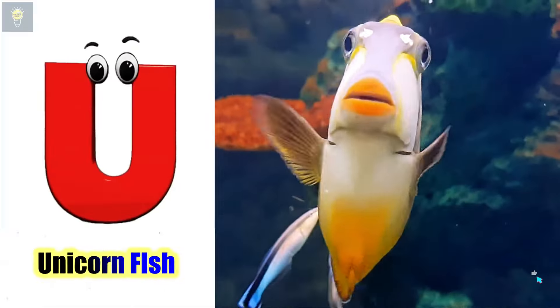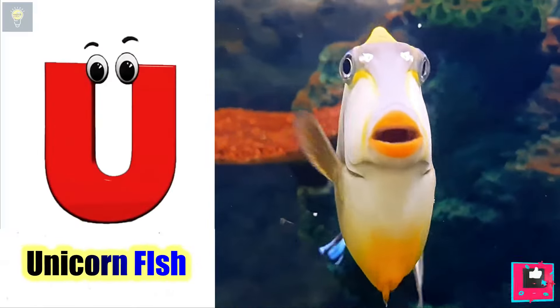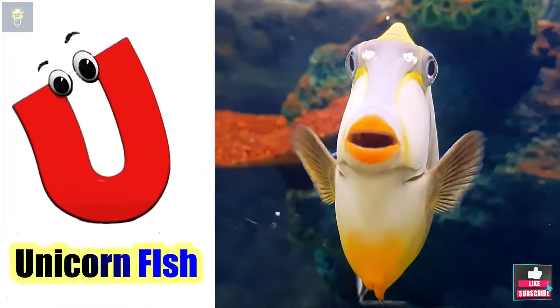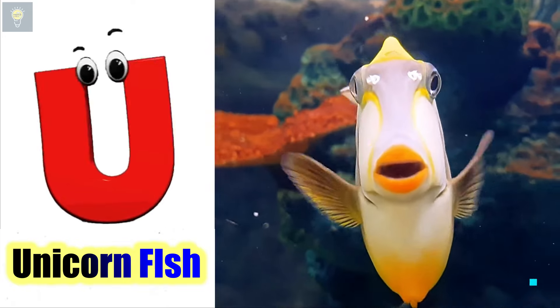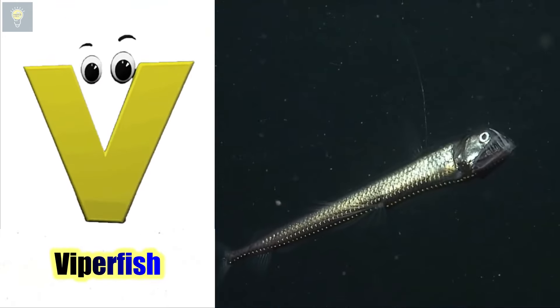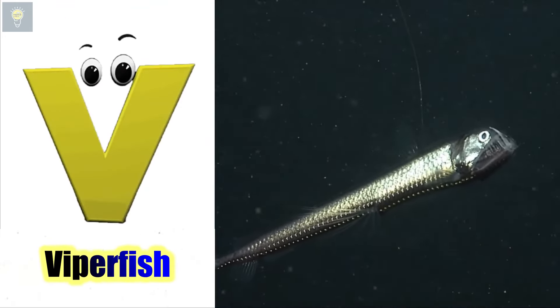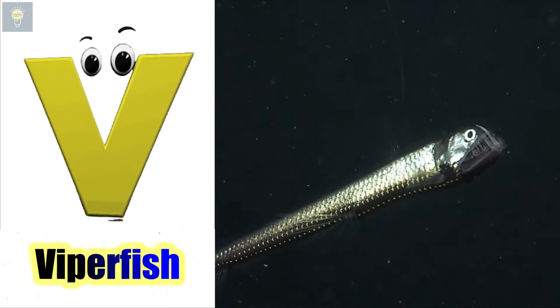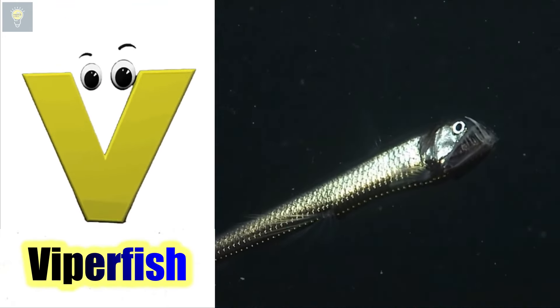U is for unicornfish. U, unicornfish. V is for viperfish. V, viperfish.